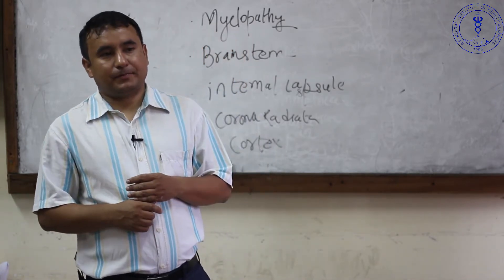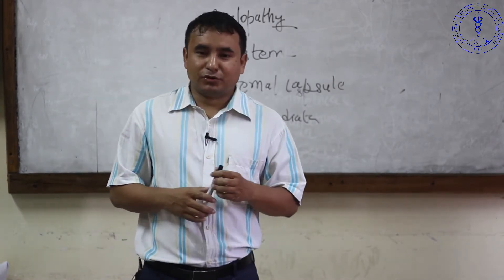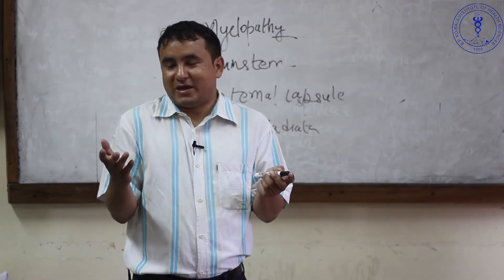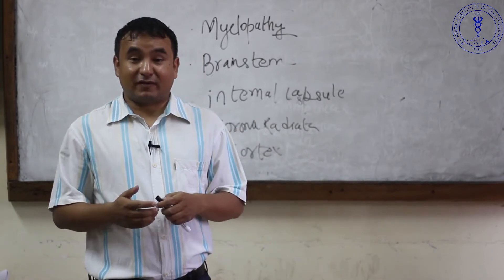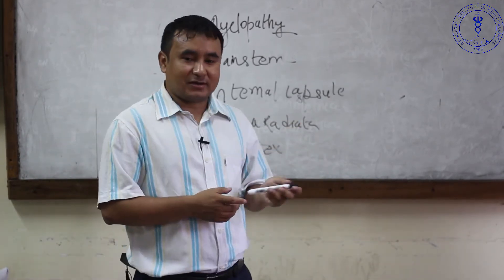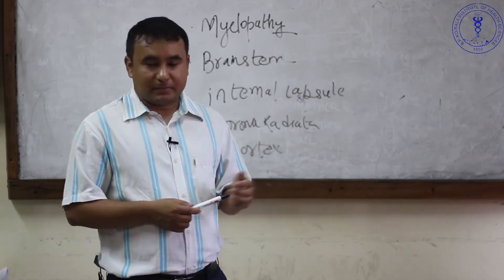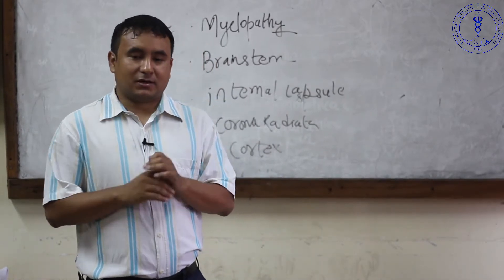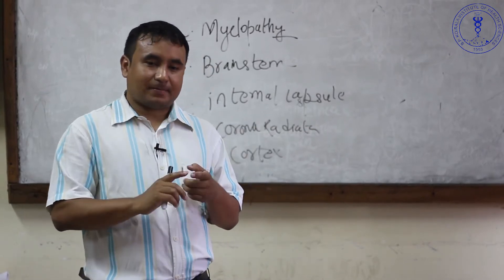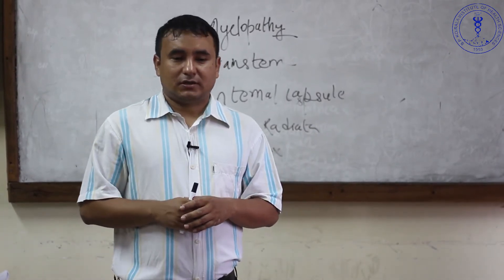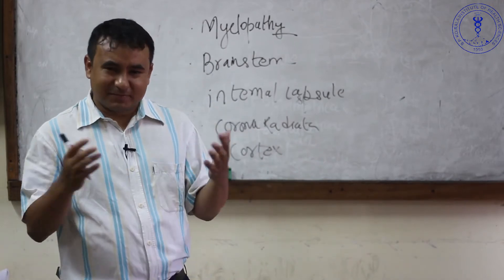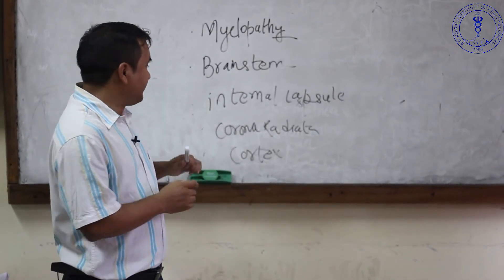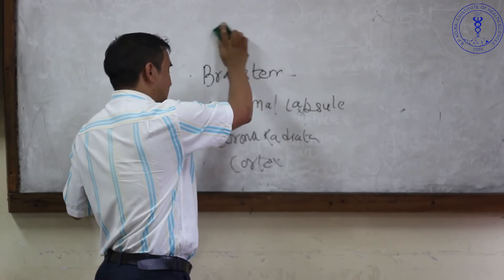In myelopathy there can also be local symptoms like backache. Since myelopathy is an upper motor neuron lesion, after the completion of spinal shock your patient may have hyper-exaggerated reflexes and clonus. You can also see hypertonic limbs. To suspect myelopathy: paraparesis or quadriparesis, bladder and bowel involvement, and some local symptoms.